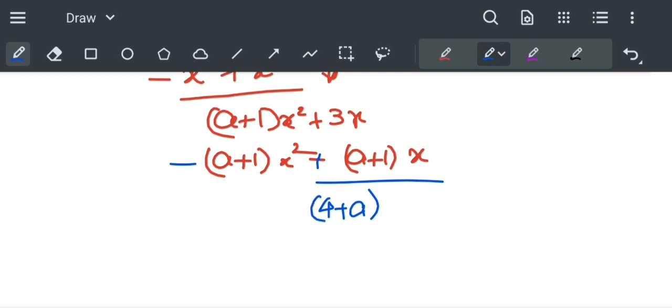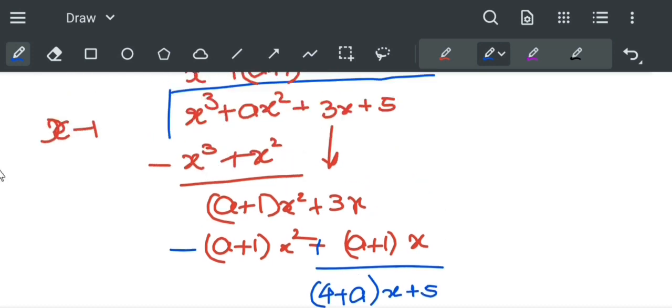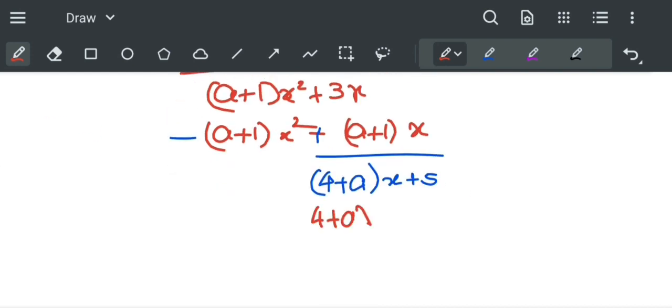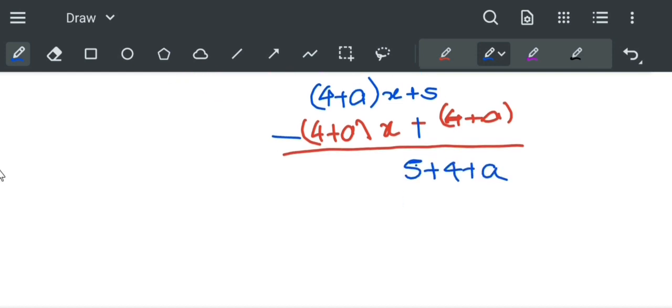So (4+a)x plus 5, and (4+a)x minus (4+a) gives us a final remainder for this first equation of 5 plus 4+a.